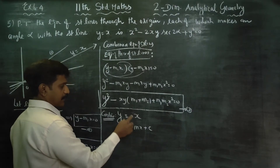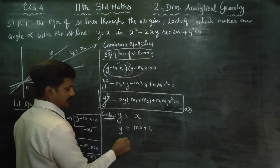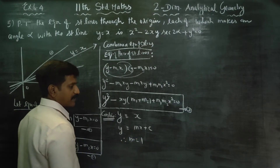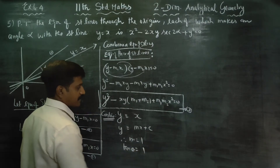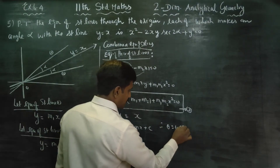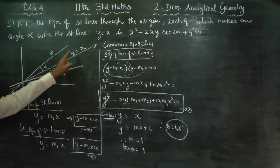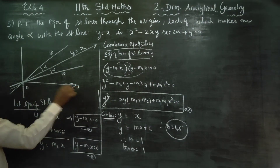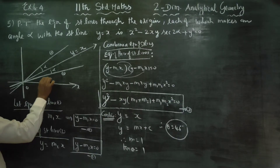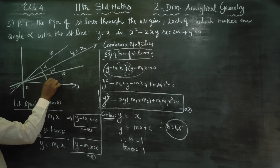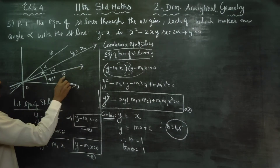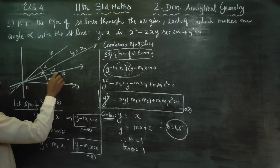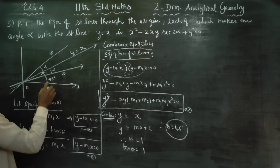The slope of y = x is m = 1. Since m = tan θ, we get tan θ = 1, so θ = 45°. Therefore the given line y = x makes an angle of 45° with the x-axis. Line 2 makes an angle of 45° with x-axis as reference.